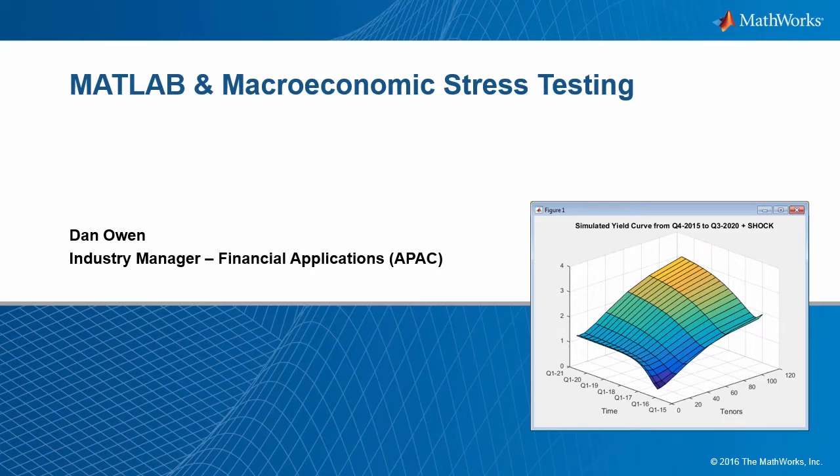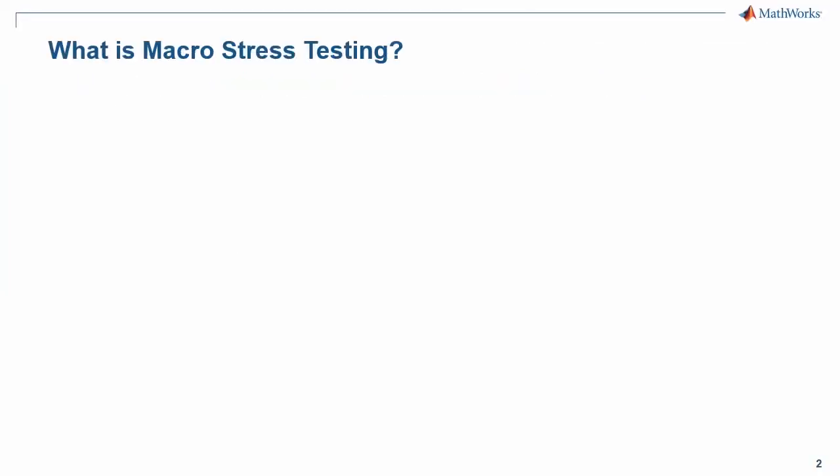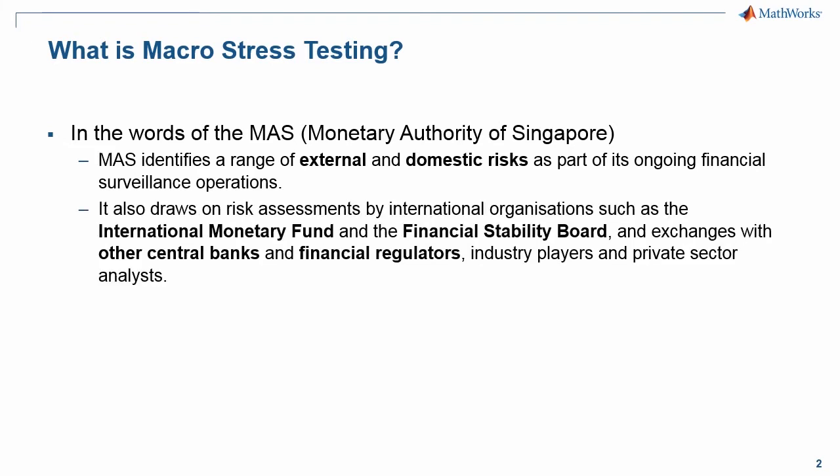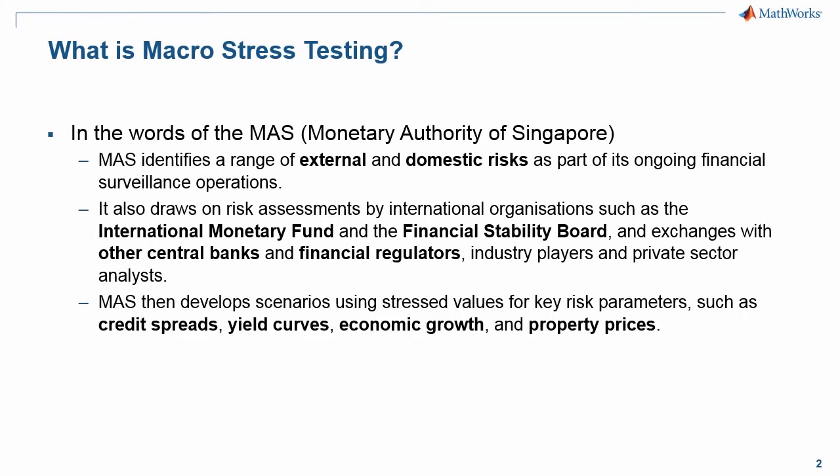So first of all, what is macro stress testing? In the words of the Monetary Authority of Singapore, they identify a range of external and domestic risks as part of their ongoing financial surveillance operations. They also draw on risk assessments from international organizations such as the IMF and the Financial Stability Board, together with assessments with other central banks and financial regulators. They then develop scenarios.